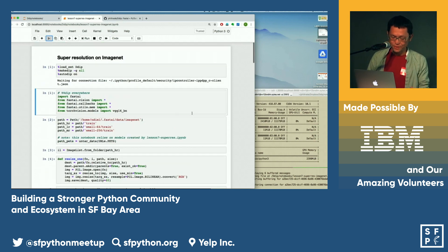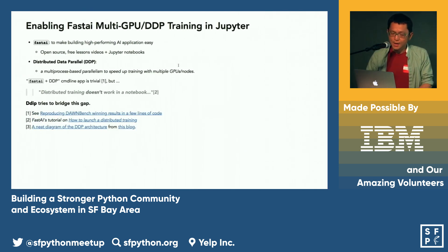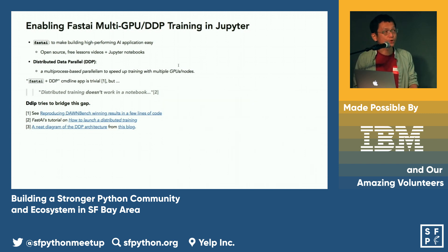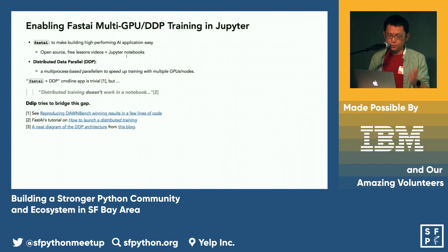So what are we going to do about it? There are different approaches, and one architecture is Distributed Data Parallel (DDP). Fast.AI is built on PyTorch, and PyTorch has pretty good DDP support. Writing a Fast.AI application using DDP is very trivial. However, all the great Jupyter notebooks in the Fast.AI lessons — as the Fast.AI folks say — just don't work in the notebook.